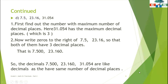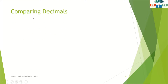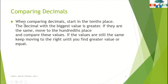So scholars, here we have learned how to convert unlike decimals to like decimals and we have completed exercise 7.1. Now scholars we will start with exercise 7.2 where we will solve only the first question — that is comparing decimals. While comparing decimals, start at the tenths place. But before that, you have to check the whole number part. If the whole number part is the same, then you start at the tenths place. The decimal with the greatest value is greater.